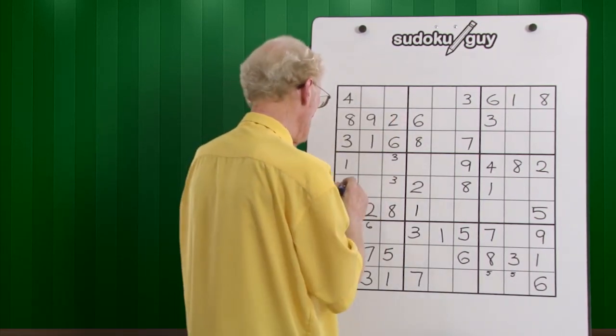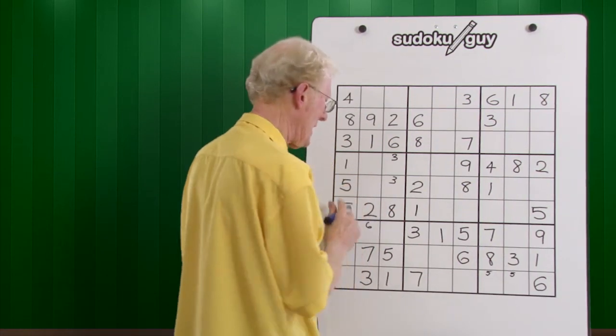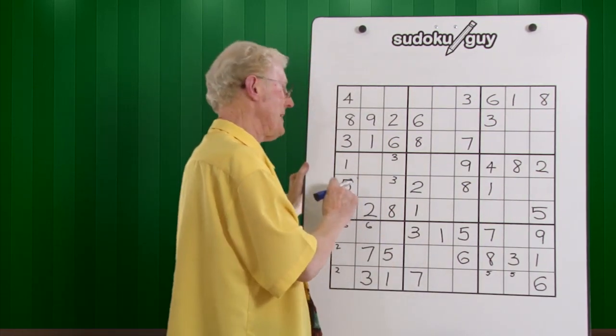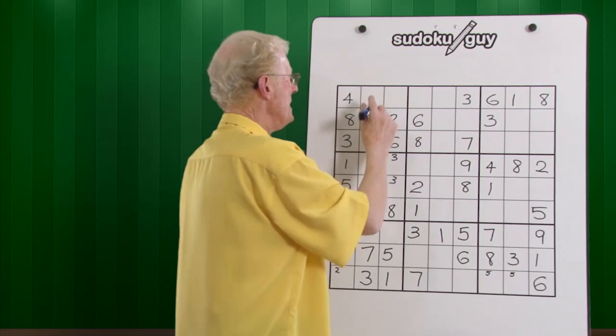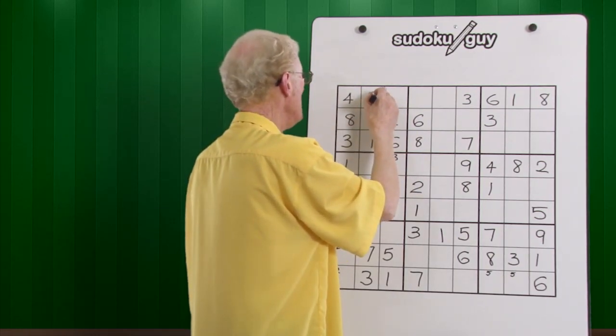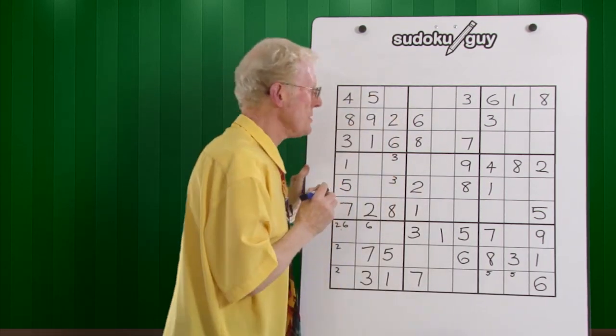So you cannot have a five there or there. It must be there because there's room for it to go up there. So here we go, we put a five. So there's the first example of how one number can help you get the other numbers in the other blocks.